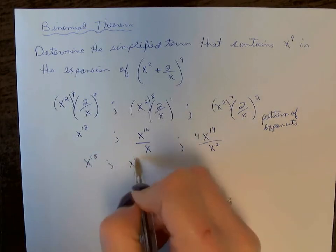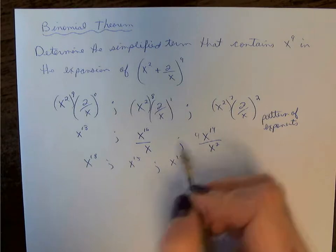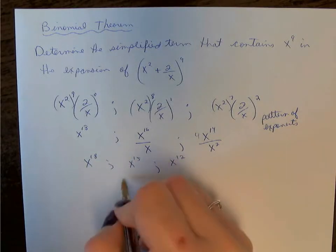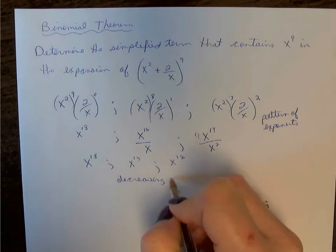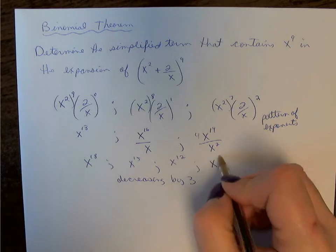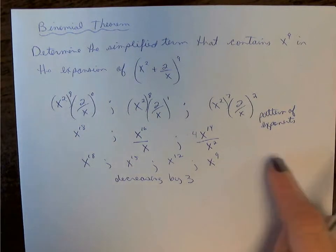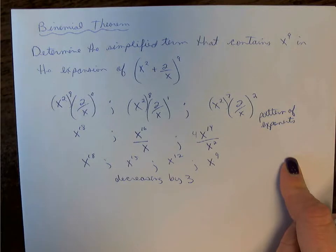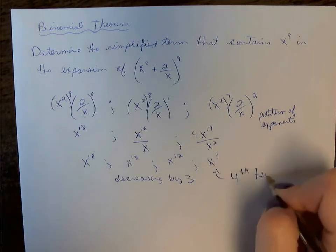If we look at the pattern, we can see that it is decreasing by 3. So if I continue this pattern, the next term would be x^9, which happens to be the term I'm looking for. Otherwise, I would have to continue counting until I find the term I need. So we are going to find the 4th term.